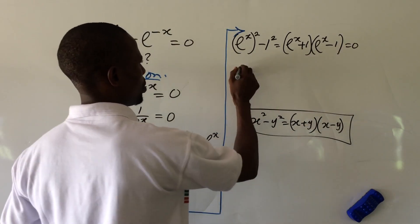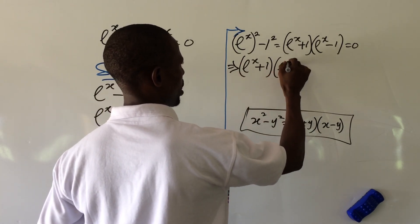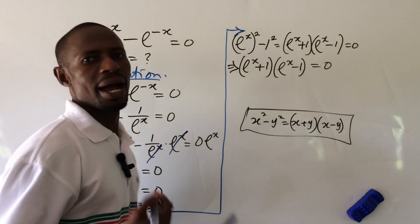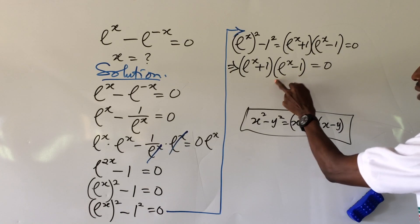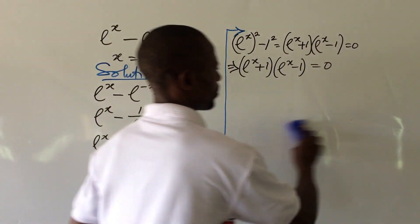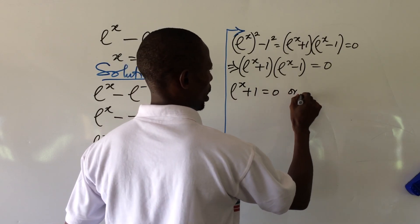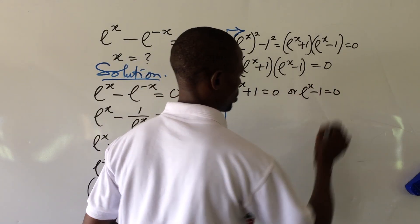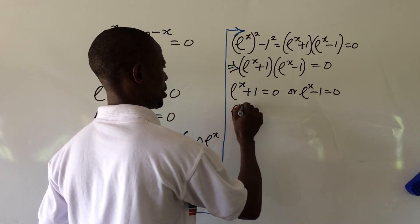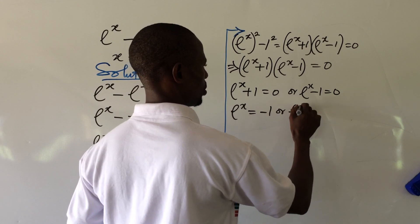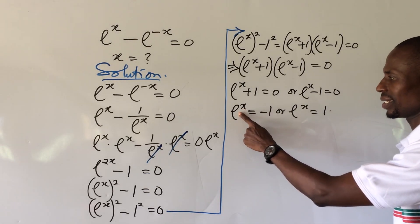So this now implies e to the power of x plus 1, times e to the power of x minus 1, all equal to zero. At this point we apply the zero product rule, equating each bracket to zero. So we have e to the power of x plus 1 equal to zero, or e to the power of x minus 1 equal to zero. This gives us e to the power of x equal to minus 1, or e to the power of x equal to 1.